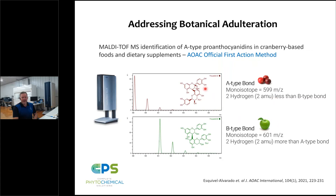The A2 dimer contains two adjacent monomeric units connected through an A-type bond. The same class of compounds — proanthocyanidins — can have a different type of bond referred to as a B-type bond, which is present in fruits like apples. These are the types of fingerprints we'll be looking at to demonstrate differentiation between cranberry and apple, and to detect potential adulterations and blends of those two products.